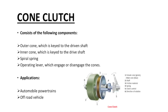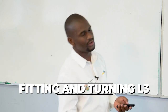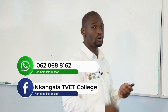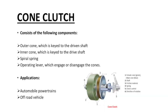Cone clutch components: an outer cone (also called female cone or recess cone) keyed to the driven shaft, an inner cone (also called male cone or spigot cone) keyed to the driving shaft, a spiral spring, and an operating lever for engaging and disengaging the cone. Application: found on automobiles, powertrains, and off-road vehicles.